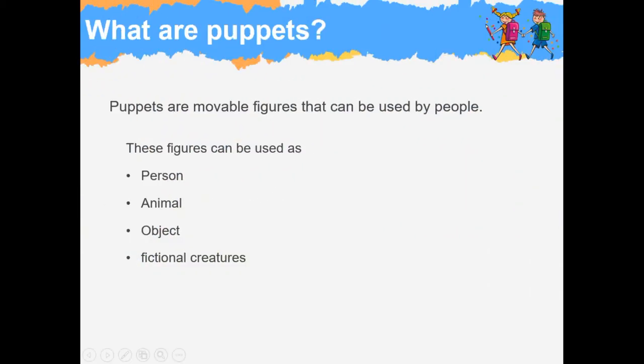What are puppets? Puppets are movable figures that can be used by people. We can use these figures as person, animal, object, or fictional creatures according to our aims.